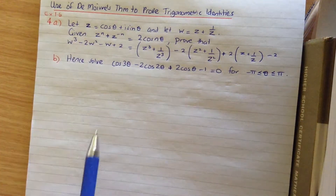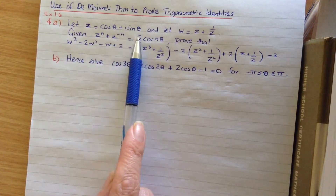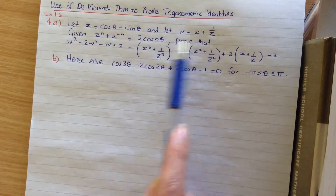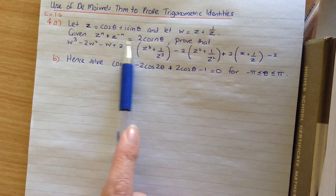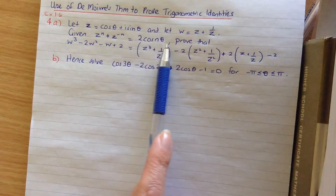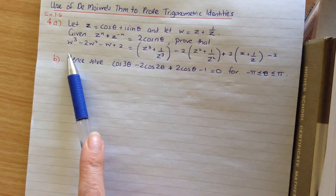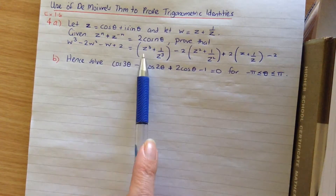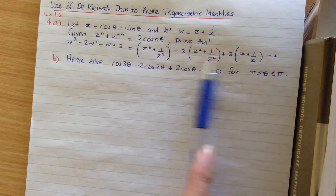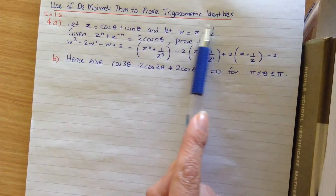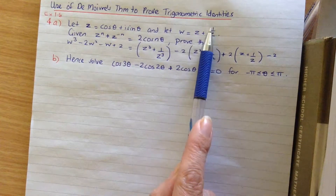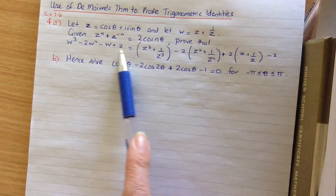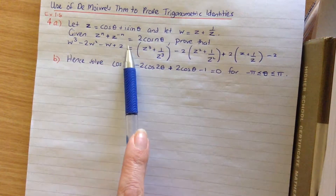The question: let z equal cos theta plus i sine theta, and let w equal z plus 1 over z. Given that z to the n plus z to the minus n is equal to 2 cos n theta, prove that w cubed minus 2w squared minus w plus 2 is equal to the given expression. We have to use this part of the question to help us, so we're going to substitute z plus 1 over z into our w's on the left-hand side.